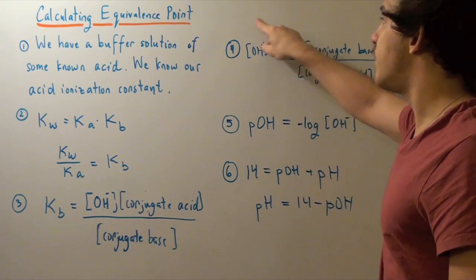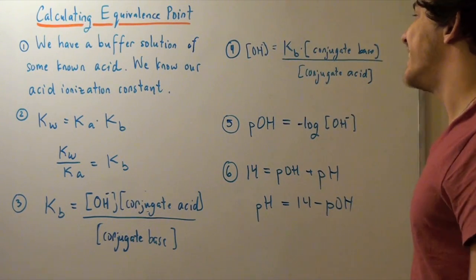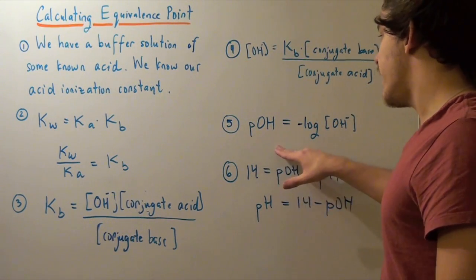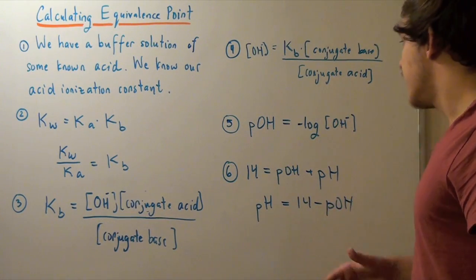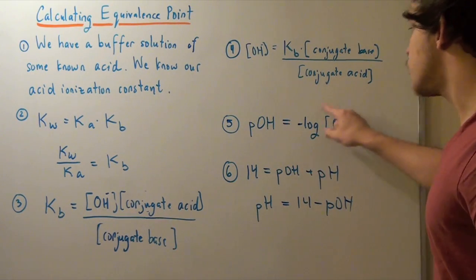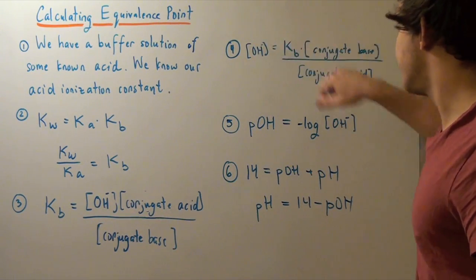Now, I solve, and I find my concentration. Next, I find my POH by using the formula, which is negative log of the concentration found here in step three.